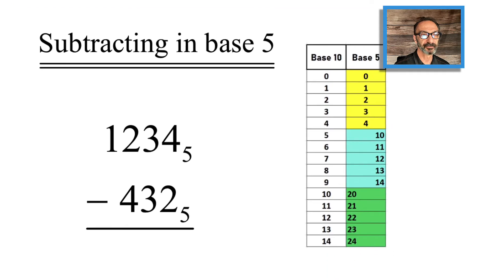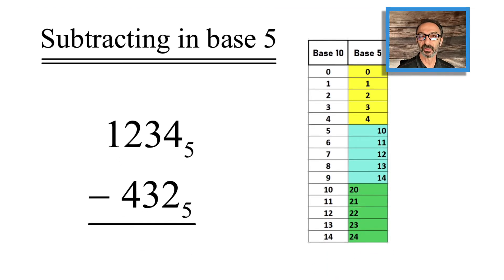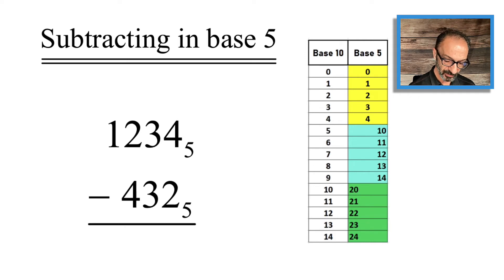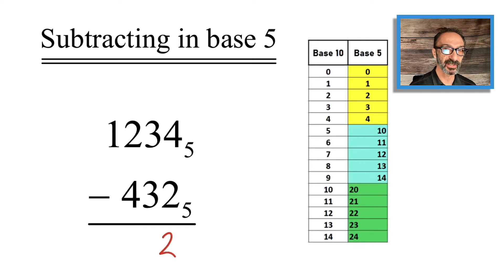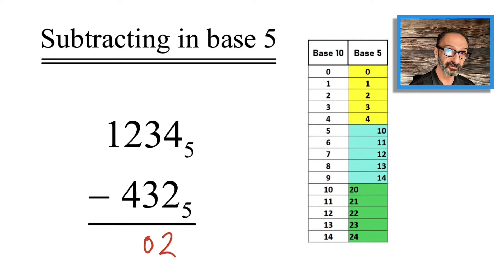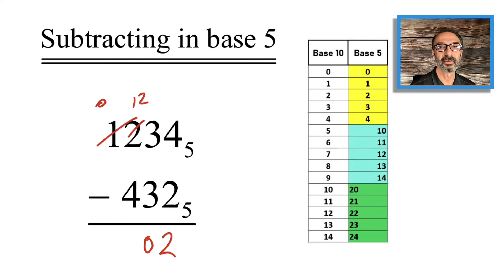Here's the second example — this one has more digits. The units place is 4 minus 2, which is 2. The second digit, the fives place, is 3 fives minus 3 fives, which is 0. Now 2 minus 4 we can't do, so we have to go to the next digit to the left and borrow 1 five, making that digit 0. This means the 2 becomes 1 2 minus 4.